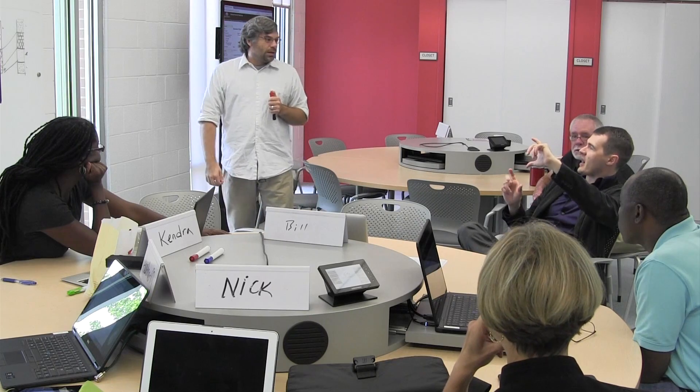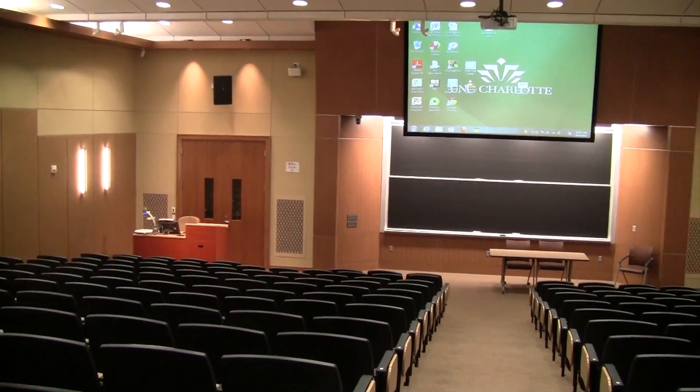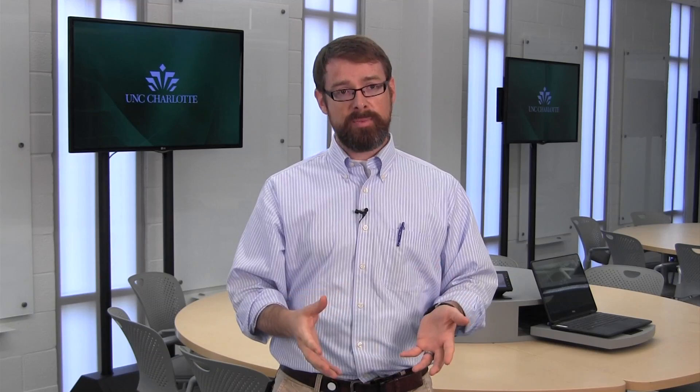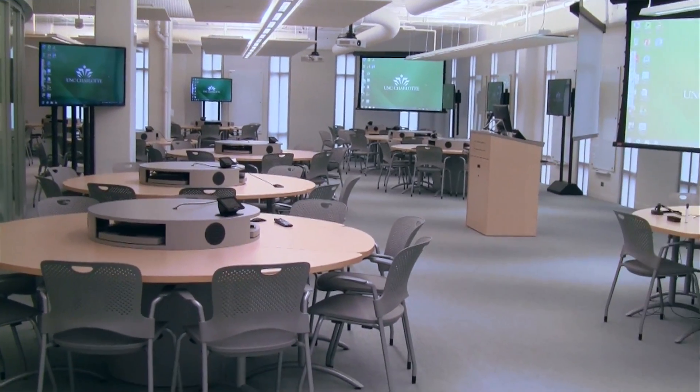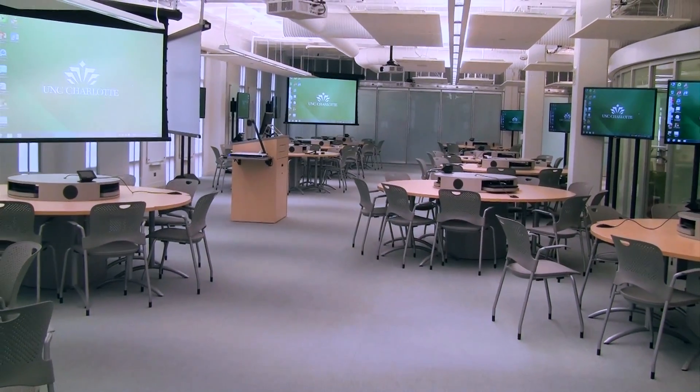The active learning classroom design differs from the standard classroom design because it focuses on collaboration. The classroom sets the stage for students to approach one another and share information. In our standard classroom model, you have individual seats and an individual focus point — students are encouraged to look straight ahead. Here, there is no individual focus point. Displays are distributed around the space so that the individual model is broken in the collaborative design. That's the primary difference.